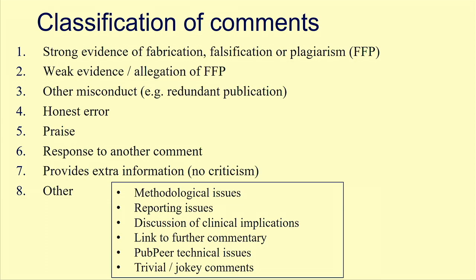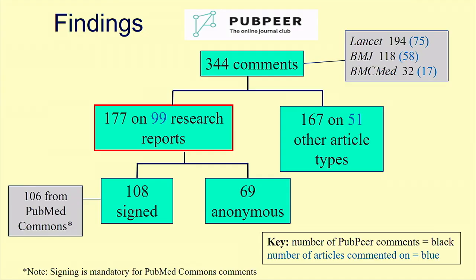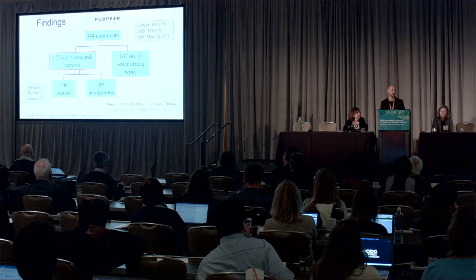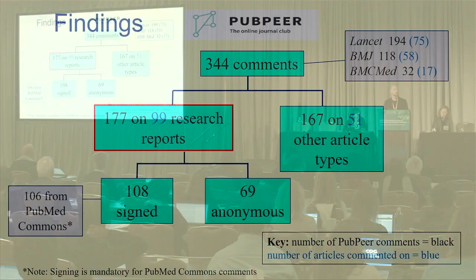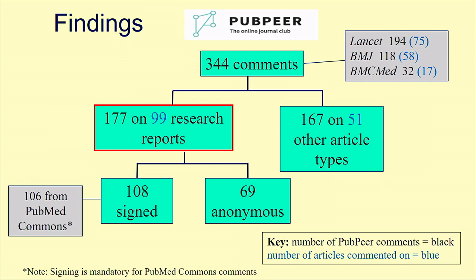In total they had 344 comments on these journals across 150 different articles. In that almost three-year period, 17,000 articles were published in these three journals, so this represents a little less than 1% of all published articles. Of those, 177 comments were related to almost 100 research articles, while the others were only tutorials, commentaries, and different issues. The majority of signed commentaries came from PubMed Commons, while the anonymous ones came directly from PubPeer.